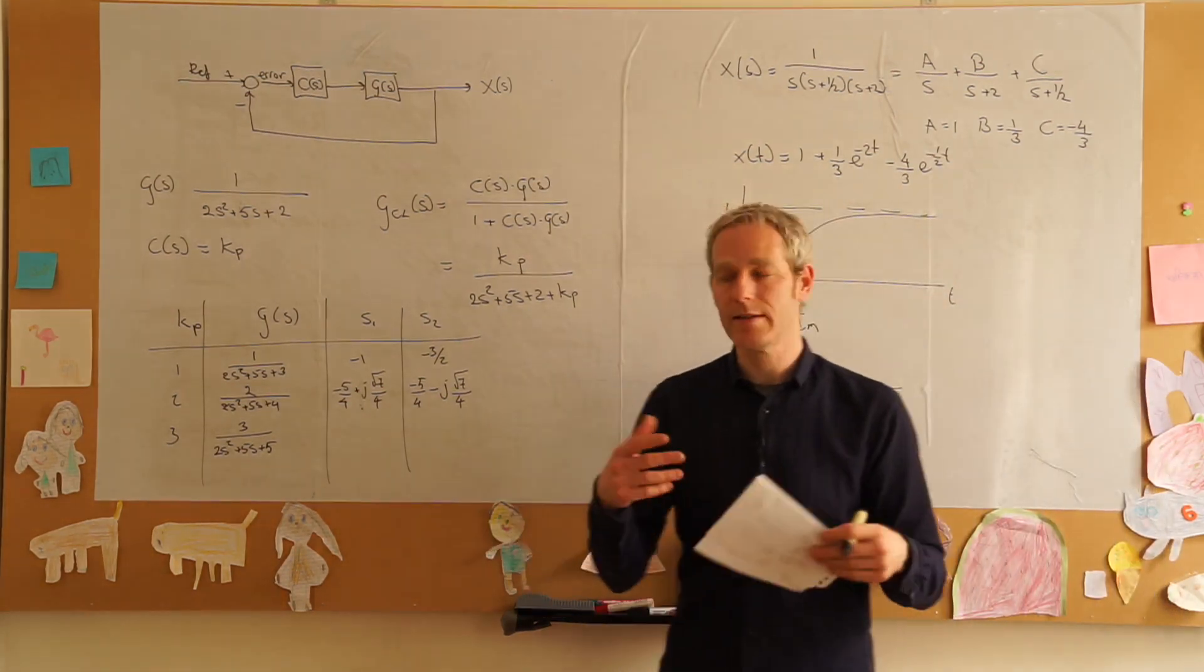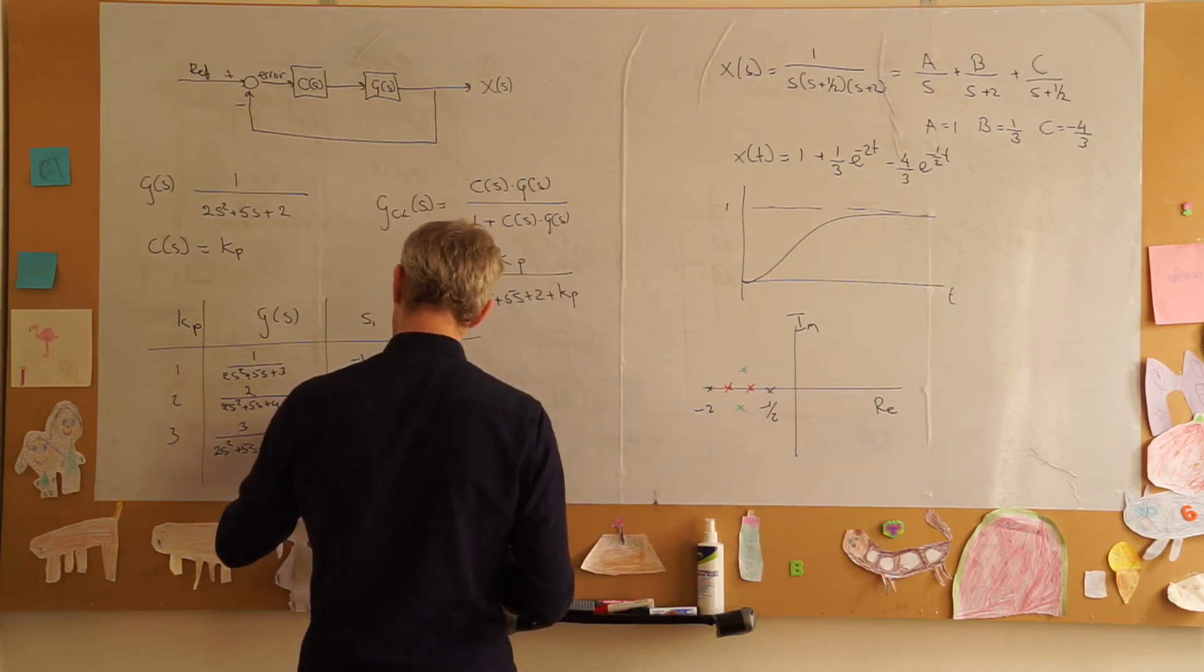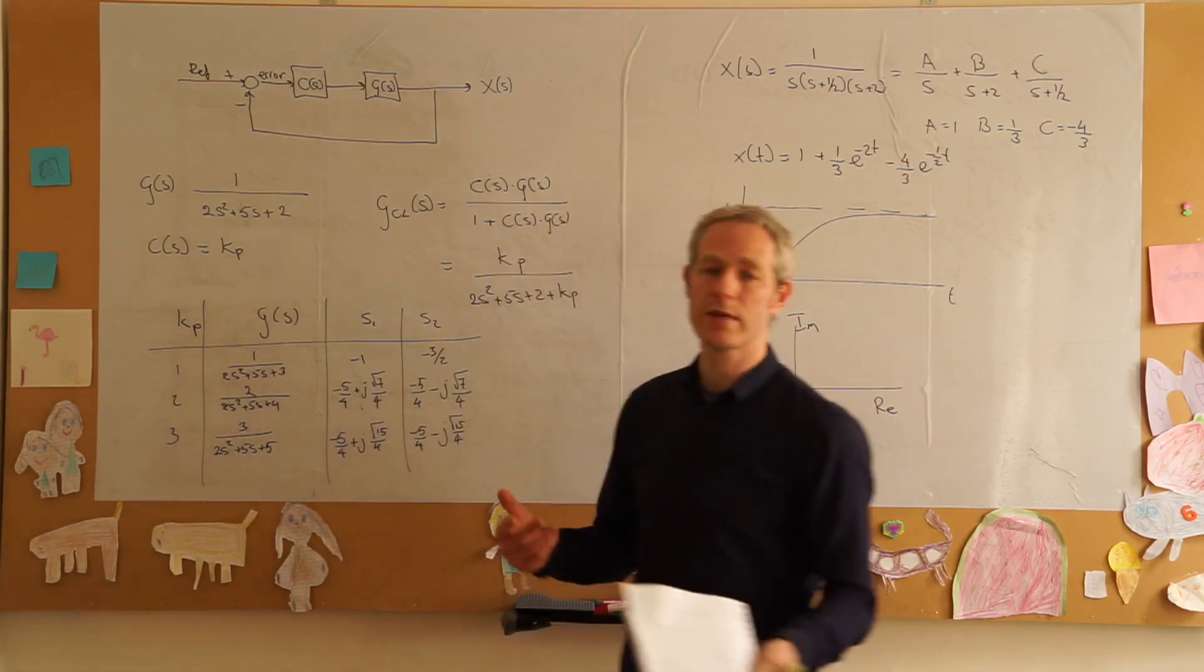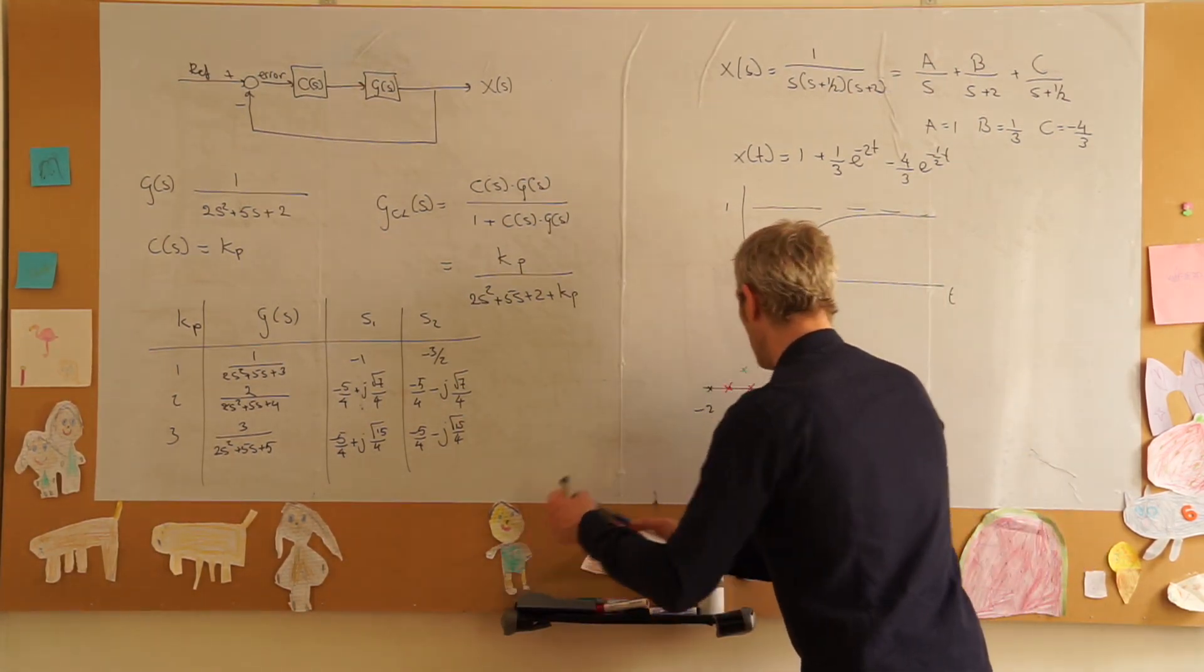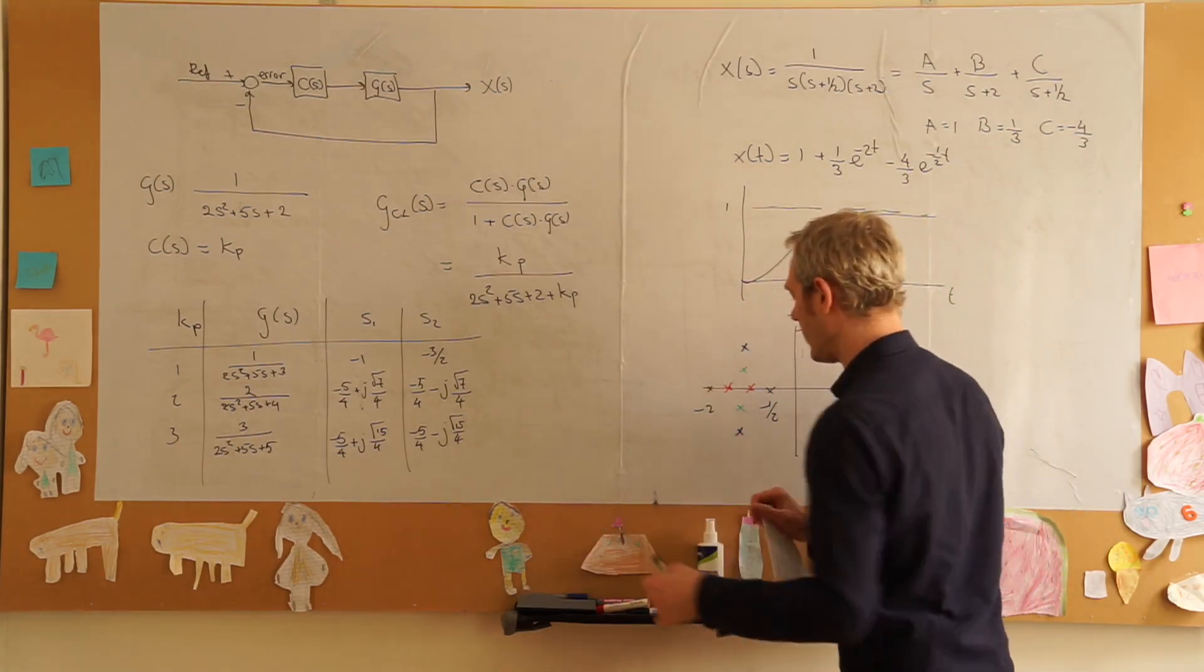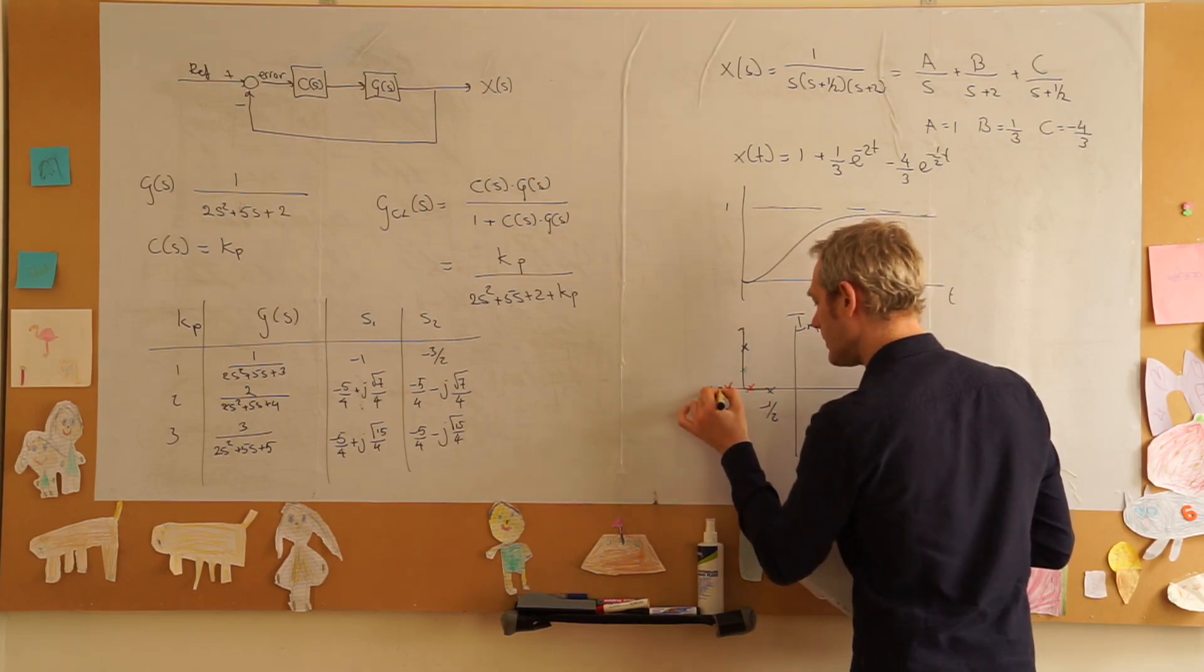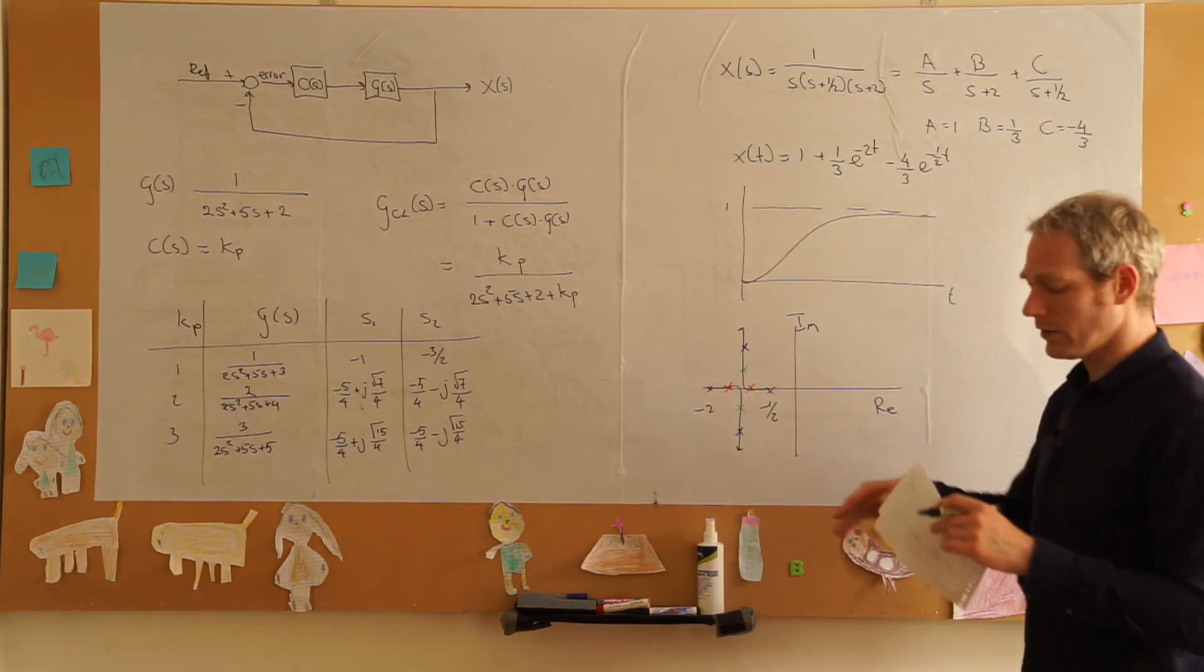Finally if we take an even larger value of k p we'll get minus five over four plus j times the square root of 15 over four and minus five over four minus j times the square root of 15 over four. If we increase the value of k simply this value will increase. If we look at the final position, what we see is that the poles move that way and this pole moves that way.